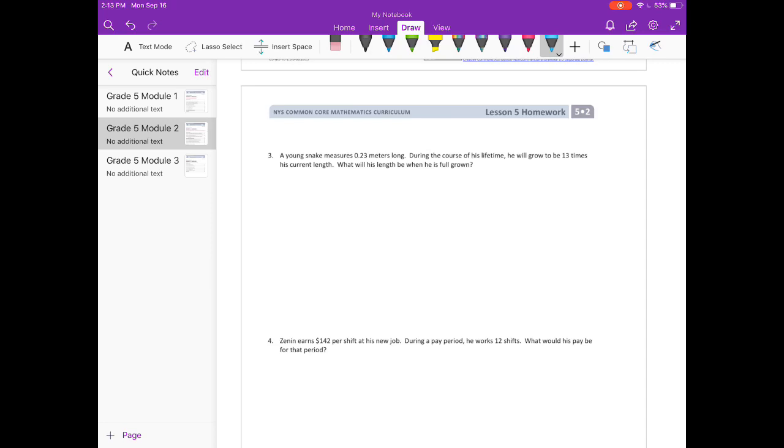So we need to do 23 hundredths times 13. So when we are multiplying, we can just forget about the decimal point to start out with. So I am just going to do 23 times 13. So 3 times 3 is 9. 3 times 2 is 6. Put my 0 down. We are done with 3. 1 times 3 is 3. 1 times 2 is 2. If I add everything together, I get 299.